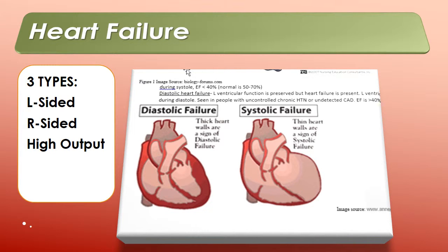In systolic heart failure, the heart muscle can't contract forcefully enough during systole and the ejection fraction is usually less than 40%. In diastolic heart failure, we have a thick heart with preserved left ventricular function, but the left ventricle can't relax adequately during diastole. It is seen with people with uncontrolled hypertension or undetected coronary artery disease. Your textbook goes into more detail on that.